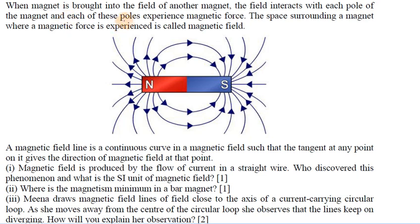When a magnet is brought into the field of another magnet, the field interacts with each pole of the magnet and each of these poles experiences a magnetic force. The space surrounding a magnet where magnetic force is experienced is called a magnetic field.